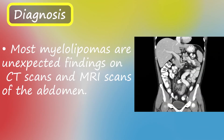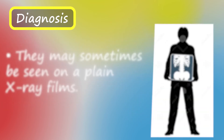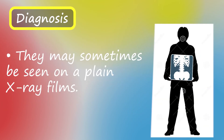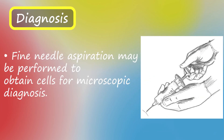Diagnosis. Most myelolipomas are unexpected findings on CT scans and MRI scans of the abdomen. They may sometimes be seen on plain x-ray films. Fine needle aspiration may be performed to obtain cells for microscopic diagnosis.